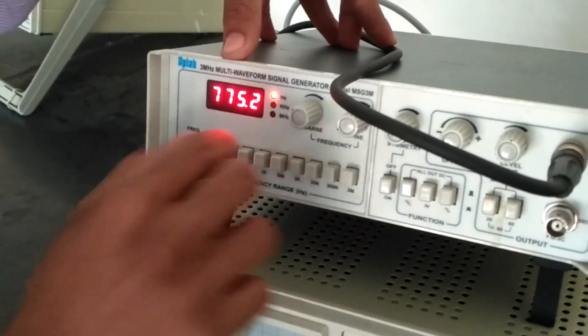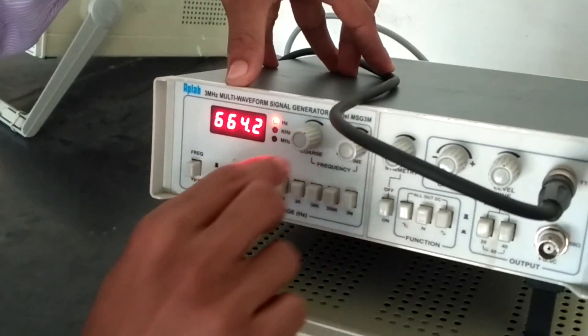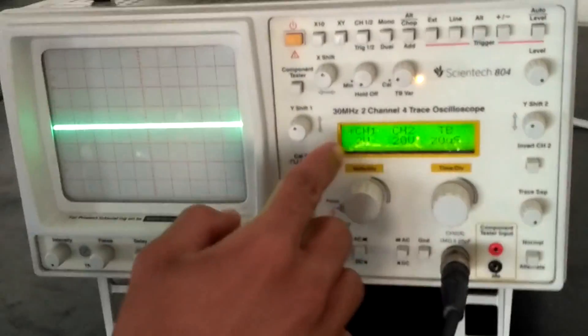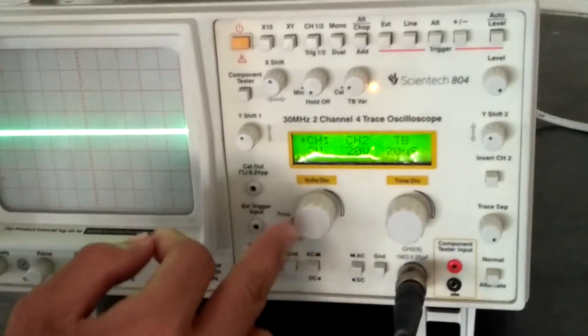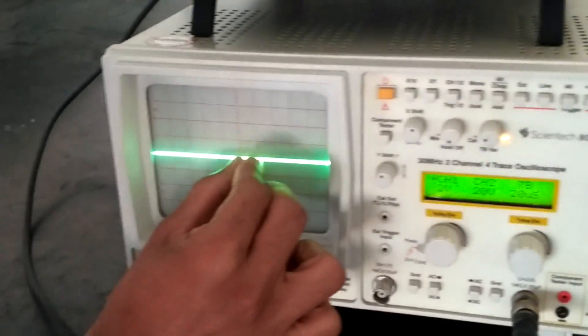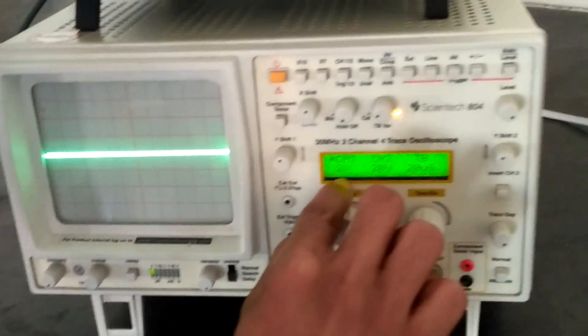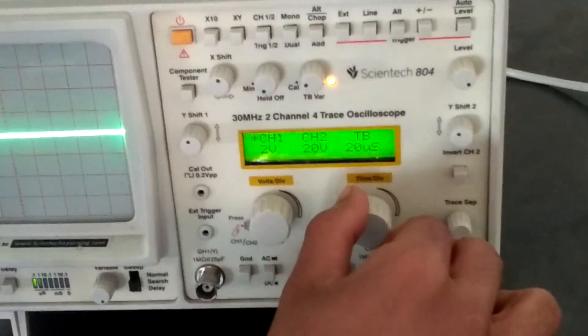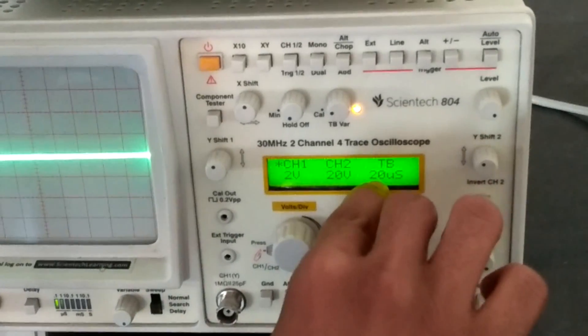This is 1.75 kilohertz. Now we have shifted it to channel 1 and this volt per division is 2 volts per division. For each division we have the value of 2 volts.